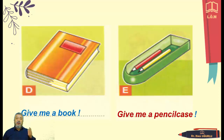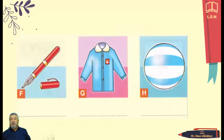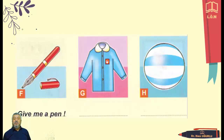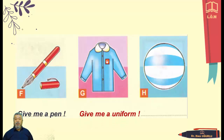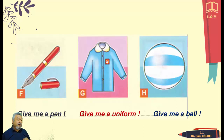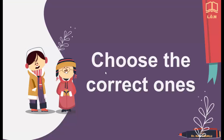And the other one, we have got three pictures. We say: give me a pen, give me a uniform, give me a ball. They are all orders or imperative sentences: give me a pen, give me a uniform, give me a ball.